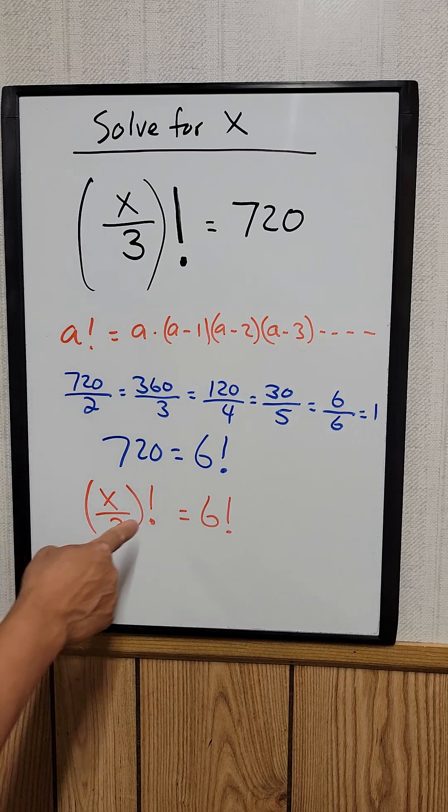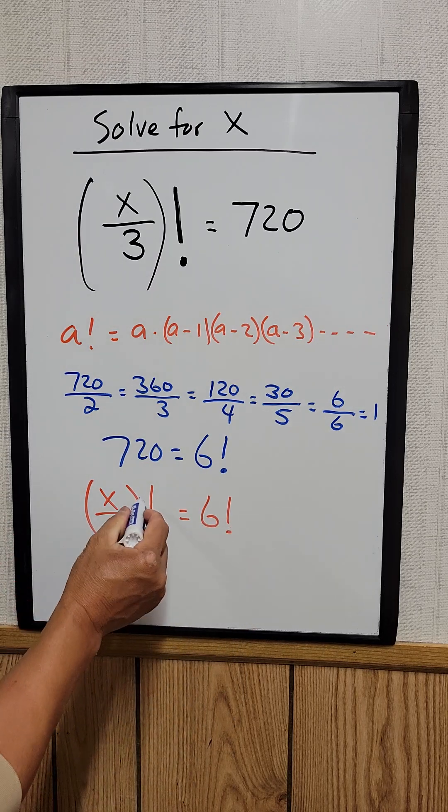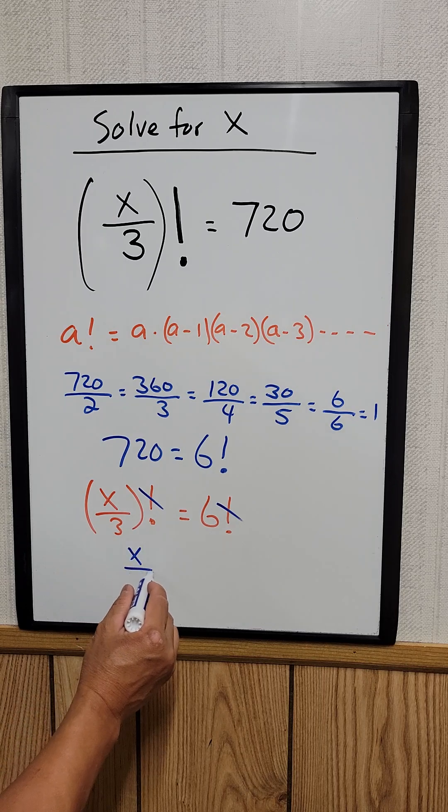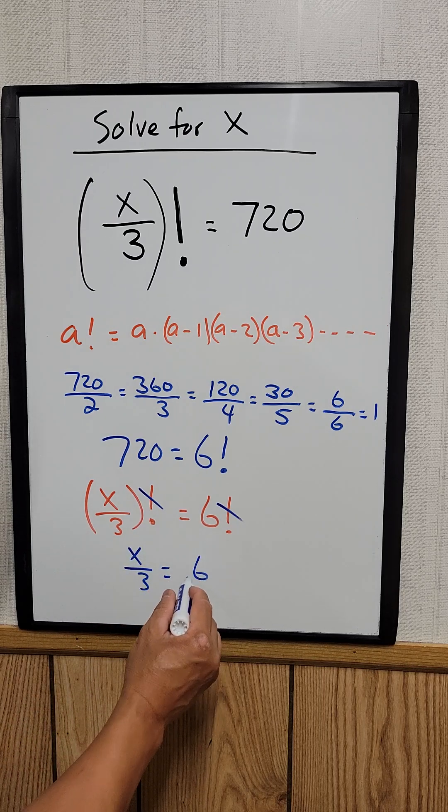When you have a factorial and factorial, you just cancel the factorial out. All we have left is x over 3 equal to 6.